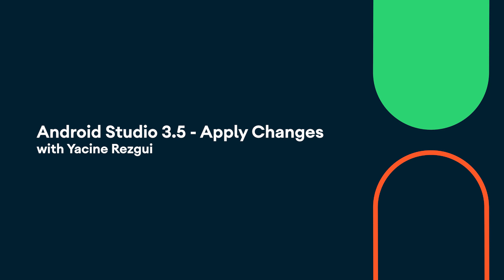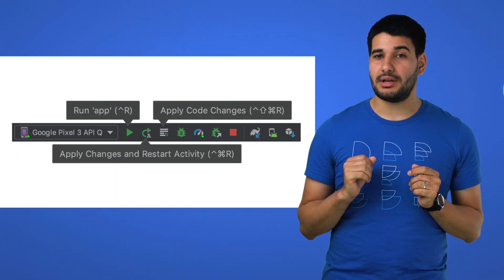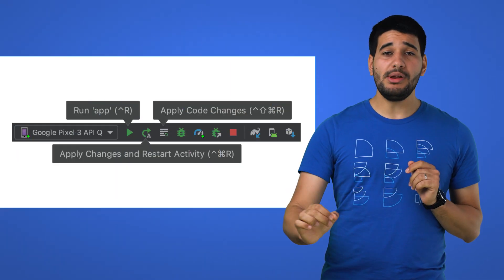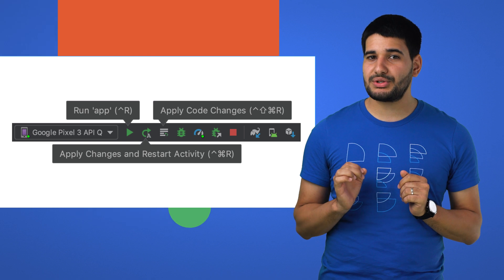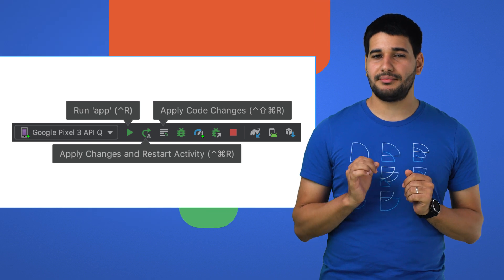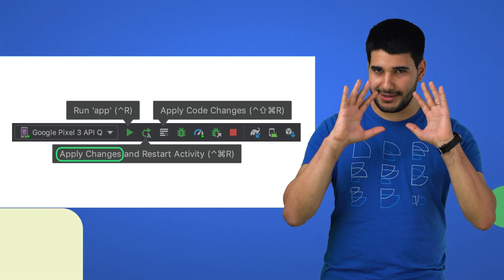Android Studio version 3.5 is now available for download on the stable channel. We heard your feedback on Instant Run, and we re-implemented it with a more practical approach from the ground up. We call this new tool Apply Changes.